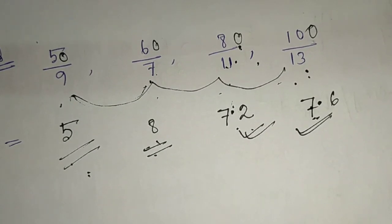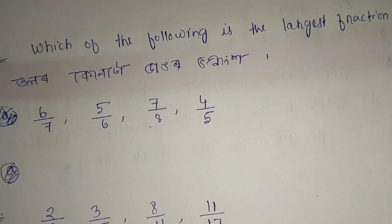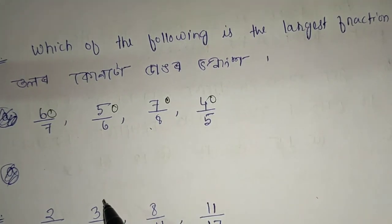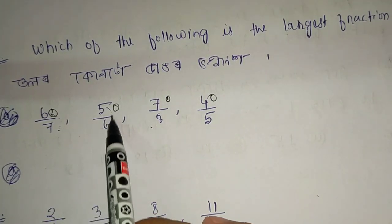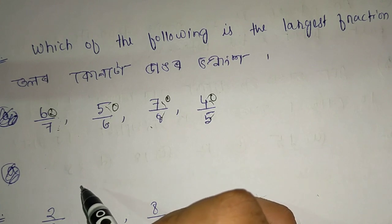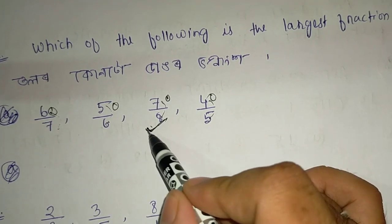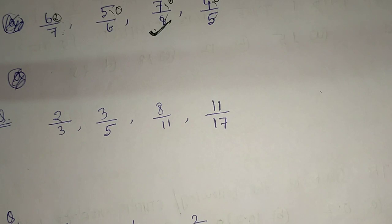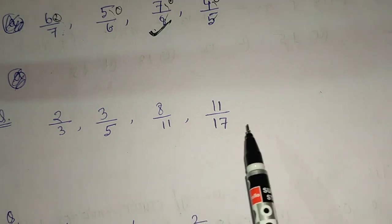Difference 0 is 0. You can solve it with the question. Which of the following is the largest fraction? If you do not apply the difference between differences, you can say 0. We can get a new concept of 2 by 3, 3 by 5, 8 by 11, and 11 by 17.